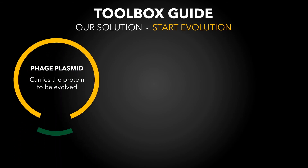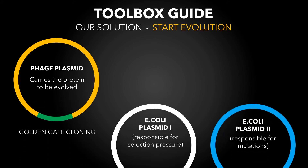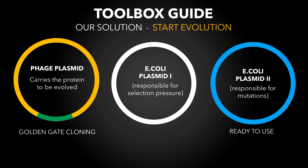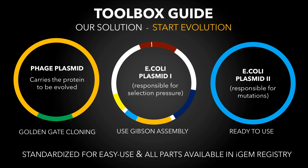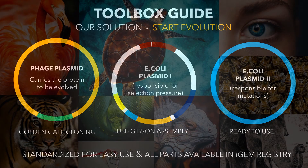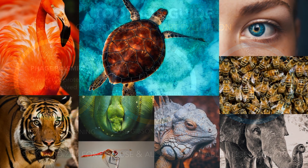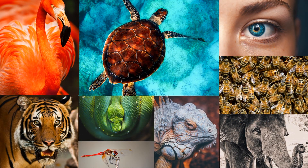Just get a plasmid for your phage and easily insert the gene of the protein you want to evolve by using Golden Gate cloning. To make evolution work, you need two more plasmids for E. coli. One of them is ready to use, while the other can be built according to your needs. With our interactive toolbox guide, you can select between different origins of replication, promoters and operator strengths. Further, you can attach a reporter protein for easy readout. Our toolbox enables scientists in universities and companies all over the world to harness the full power of evolution and find clever solutions for hundreds of problems to make this a better world.